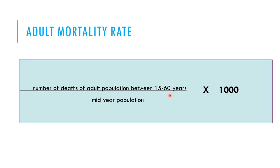Adult mortality rate is the number of deaths of adults between 15 and 60 years, divided by the median population, multiplied by 1,000. In Pakistan and India, the major cause of adult mortality is cardiovascular disease — predominantly ischemic heart disease. In the Gulf region, one of the major causes of adult mortality is road traffic accidents. We can compare these by calculating and examining the details of different mortality rates.